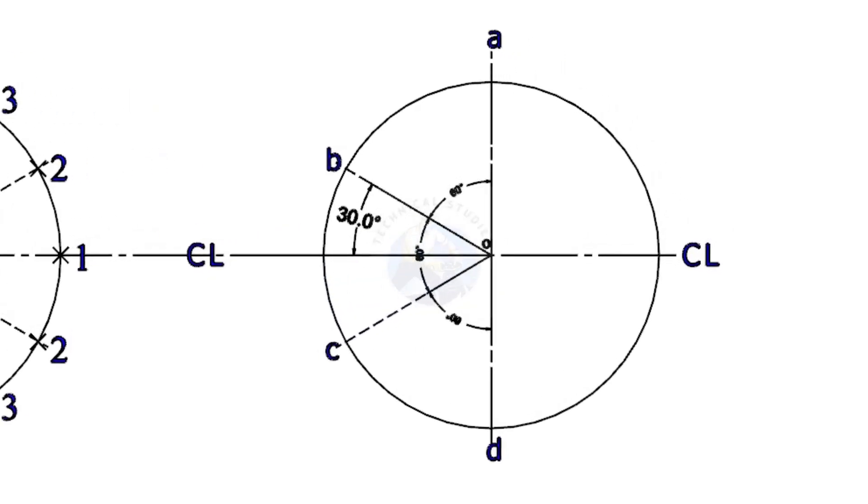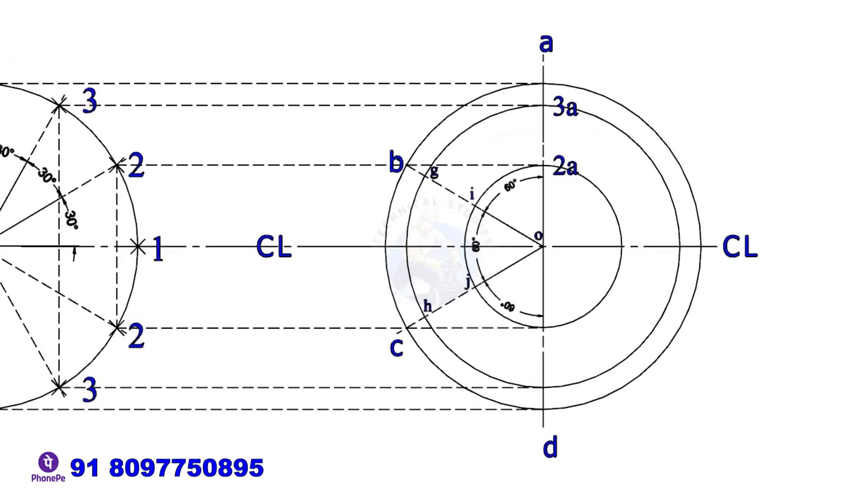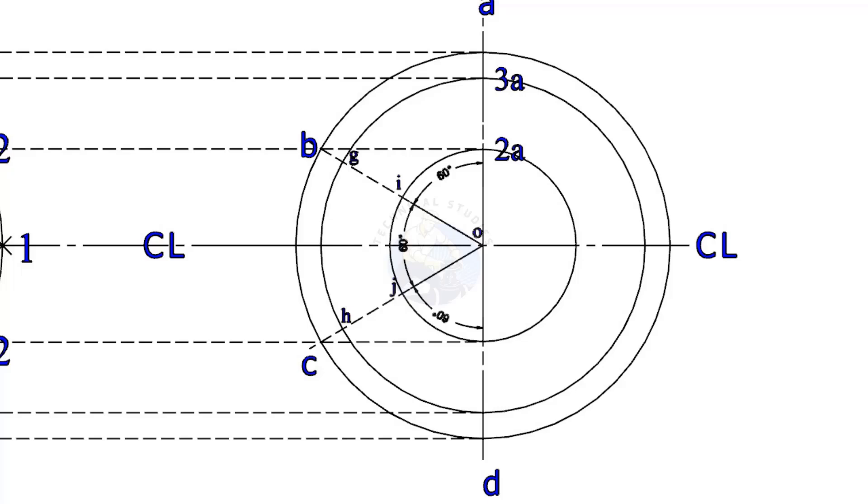Draw lines 4A, 3, 3A, 2, 2A, etc. Draw circles centering O with radius O-2A and O-3A.